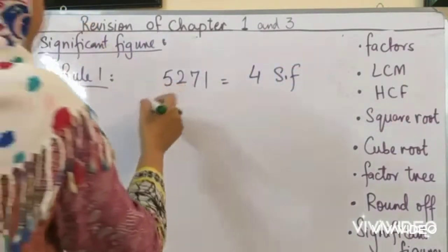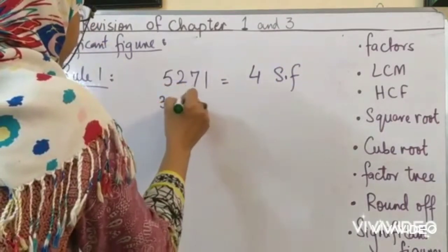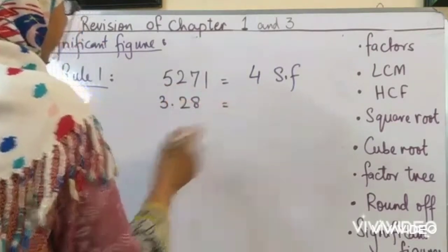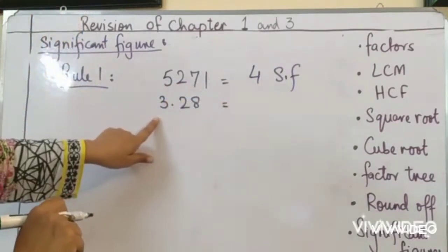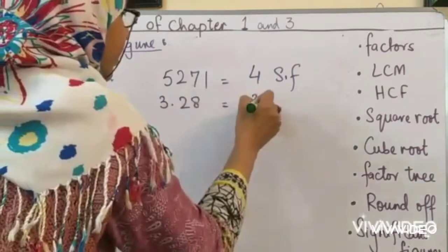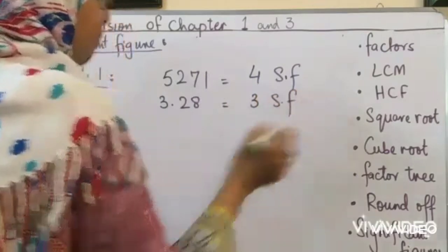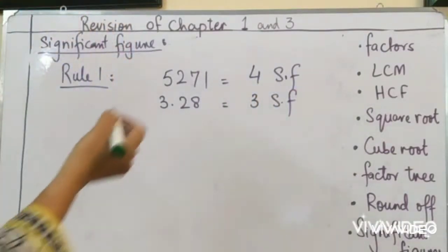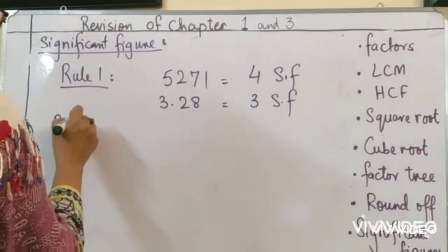Let's see an example. 3.28. No zero. They are all non-zero numbers. So 1, 2, 3. Three significant figures. Clear? Now move on to rule number 2.